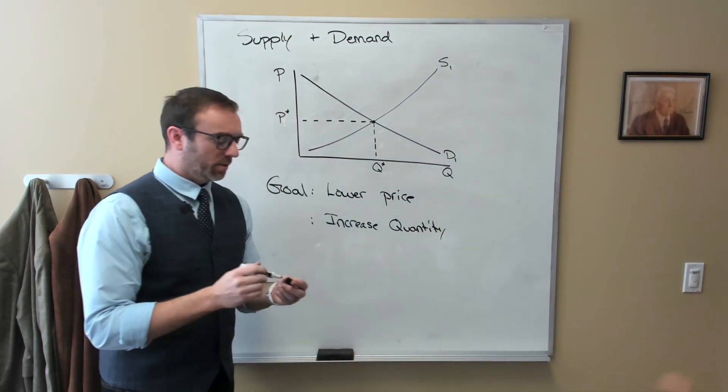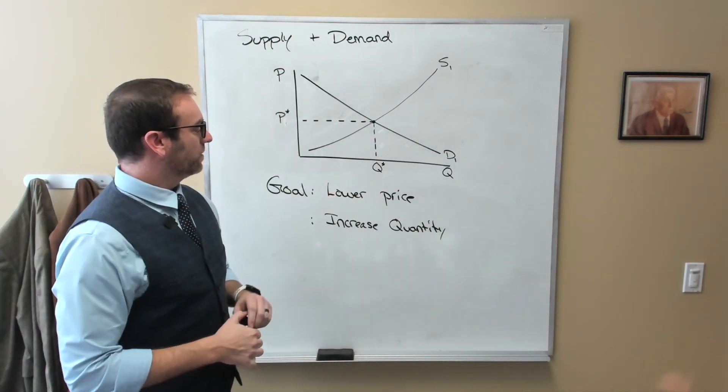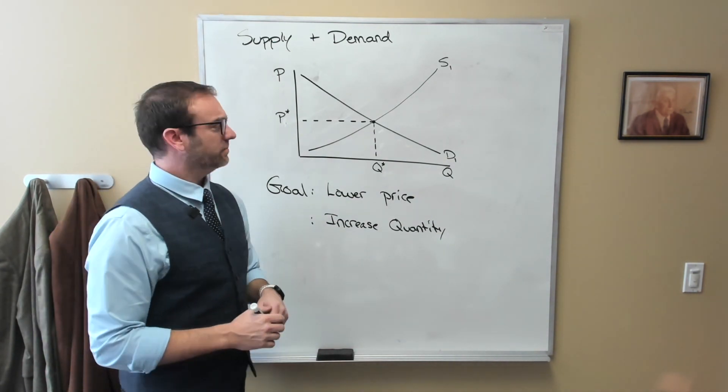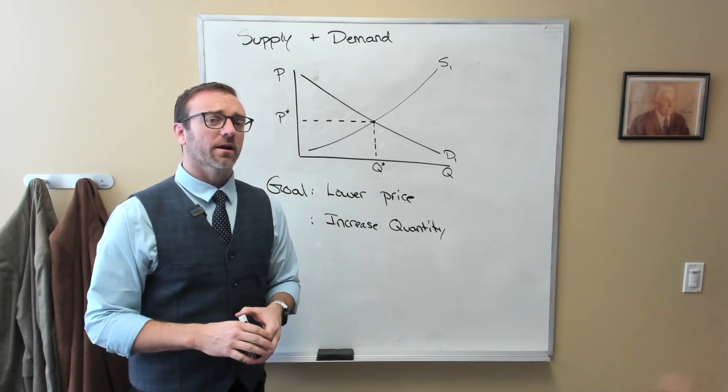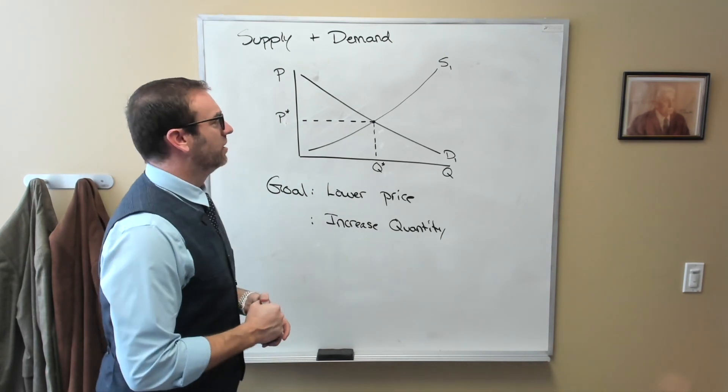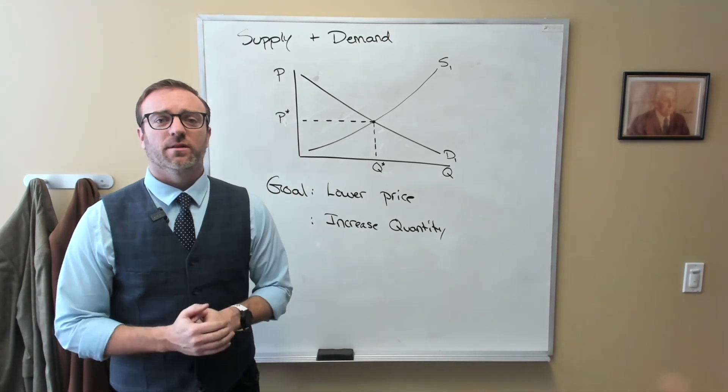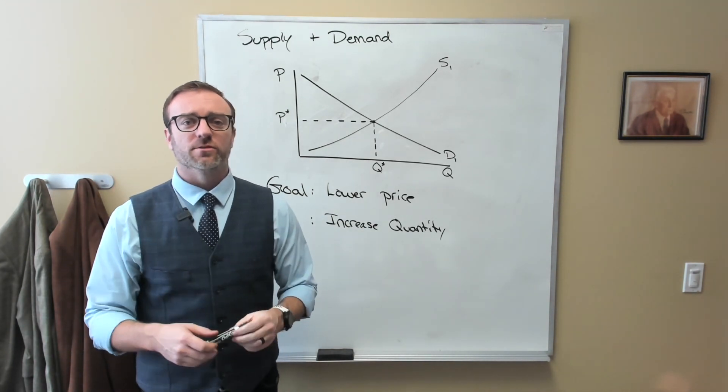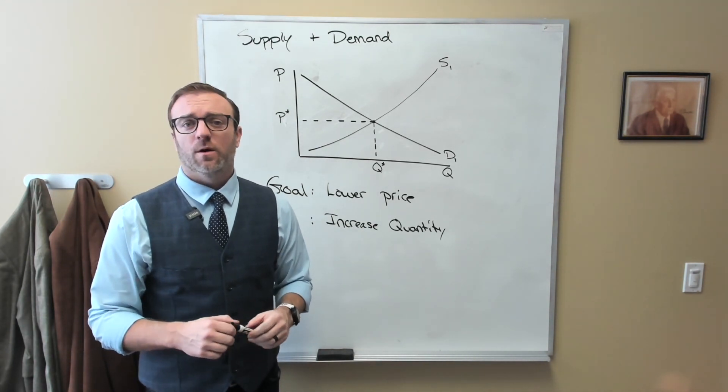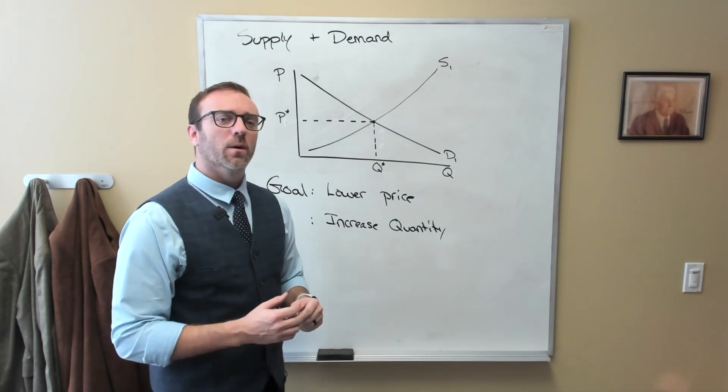Okay, so we want both, we want the lower price and we want the increase in quantity. So let's start analyzing what we could do. We could, if we wanted to, we could tax a lot of people, give that money to other people, and allow them to purchase health care.